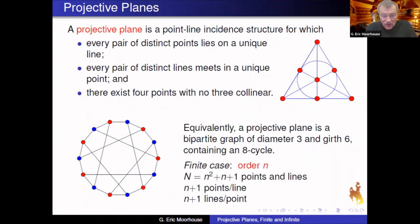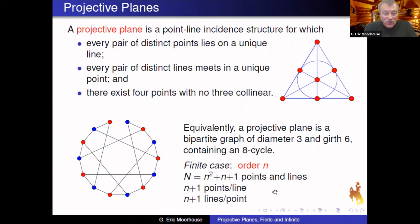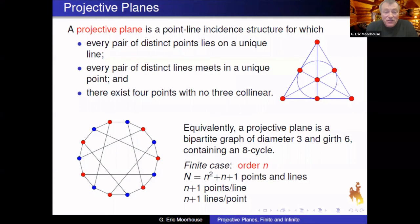A good part of my career was focused on the finite case. There we have a parameter n called the order of the plane. Capital N is n² + n + 1, the number of points and also the number of lines. There are n+1 points on every line and n+1 lines through every point. In the infinite case you still have the order, but the order equals the number of points and lines.